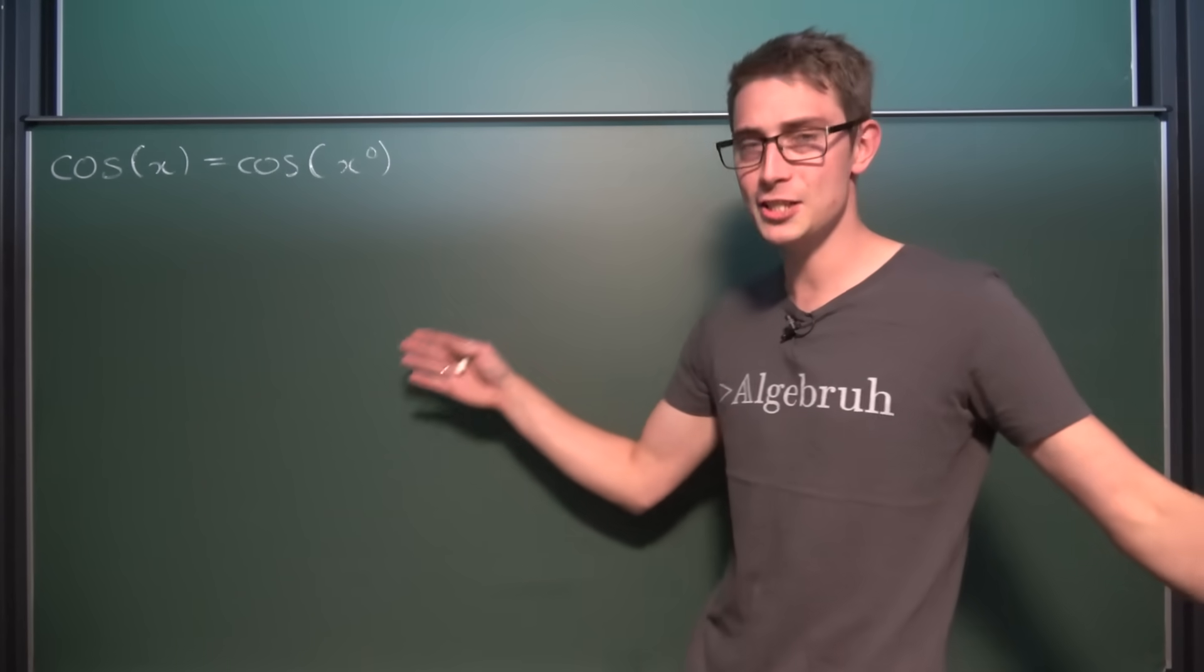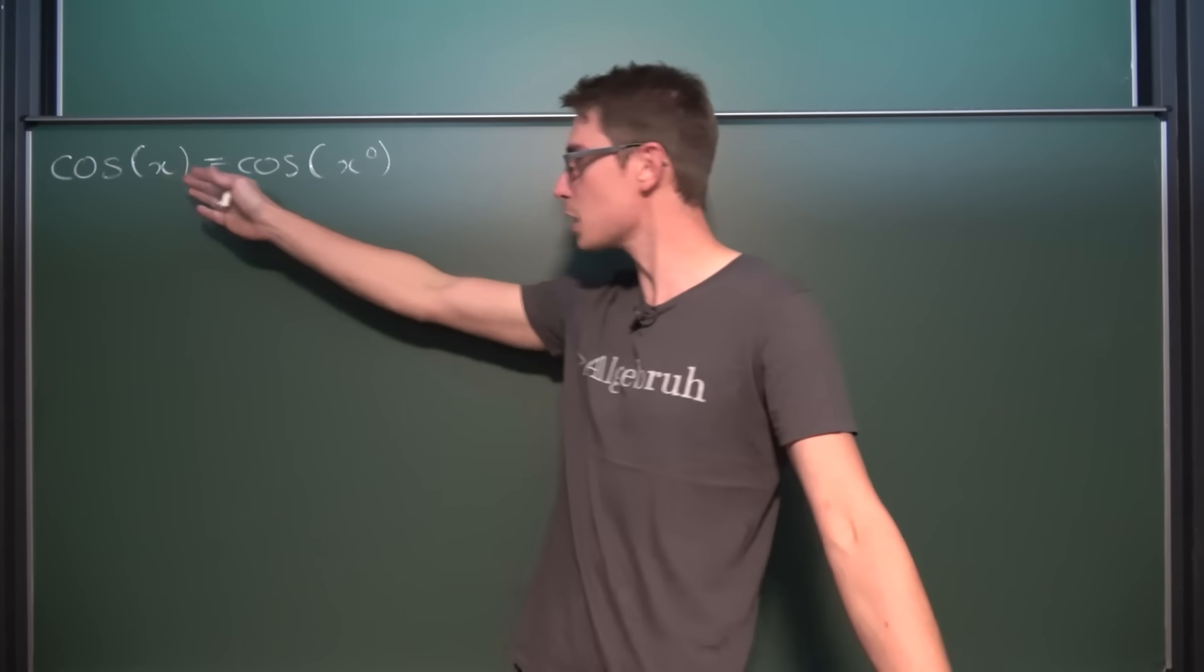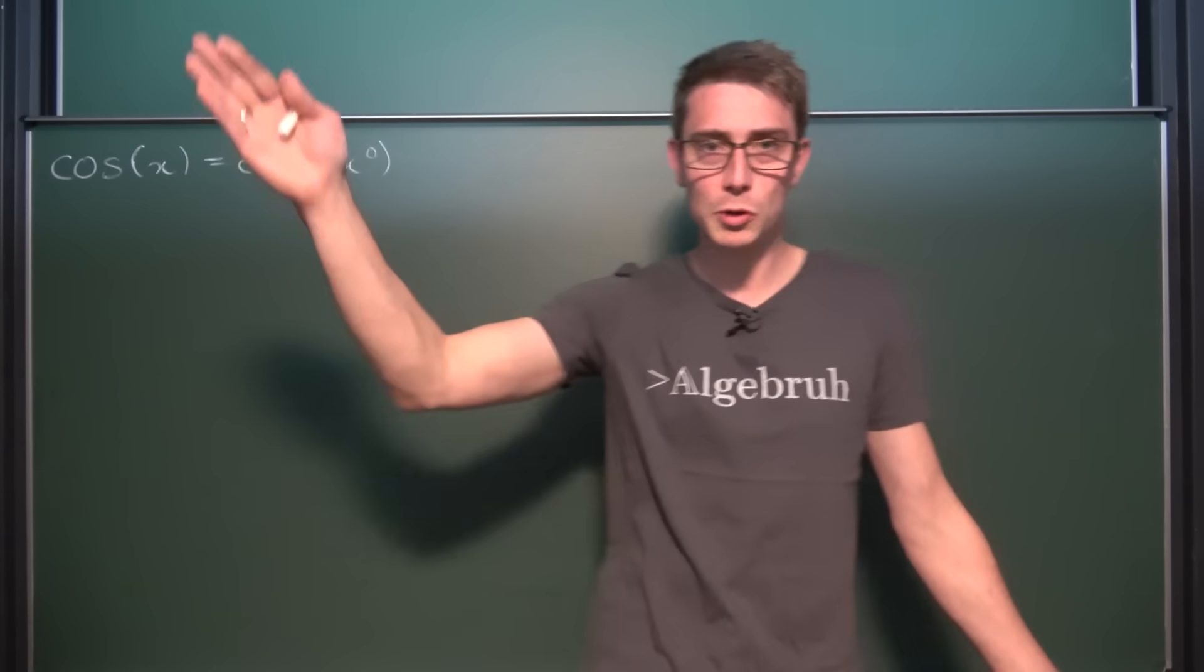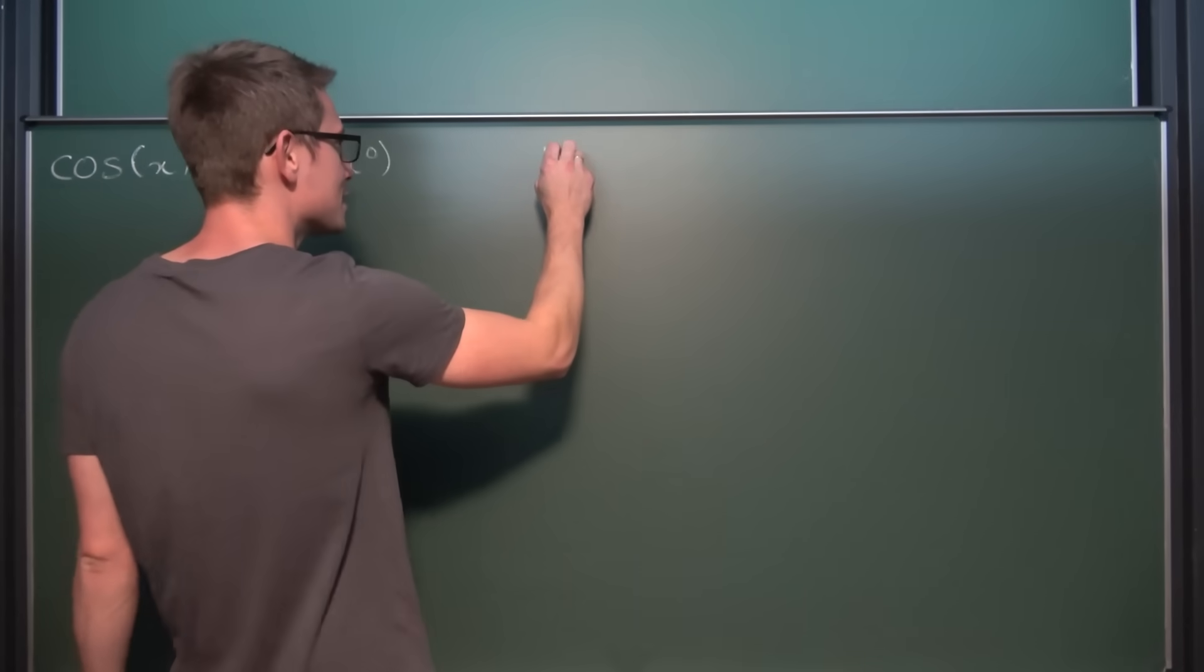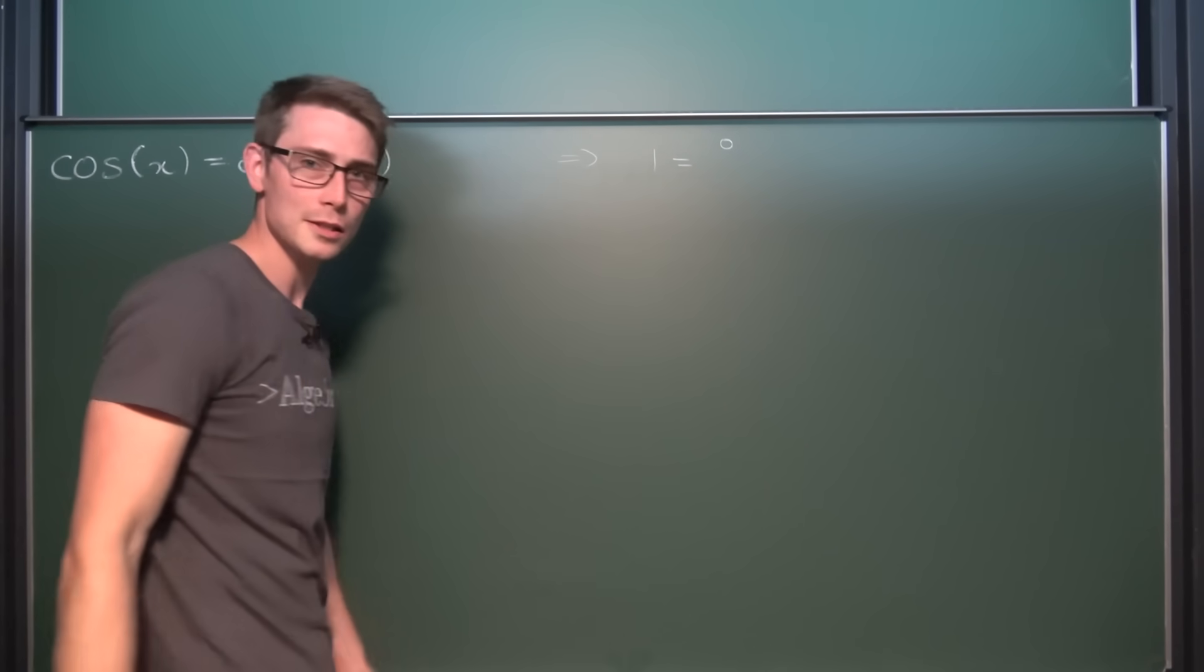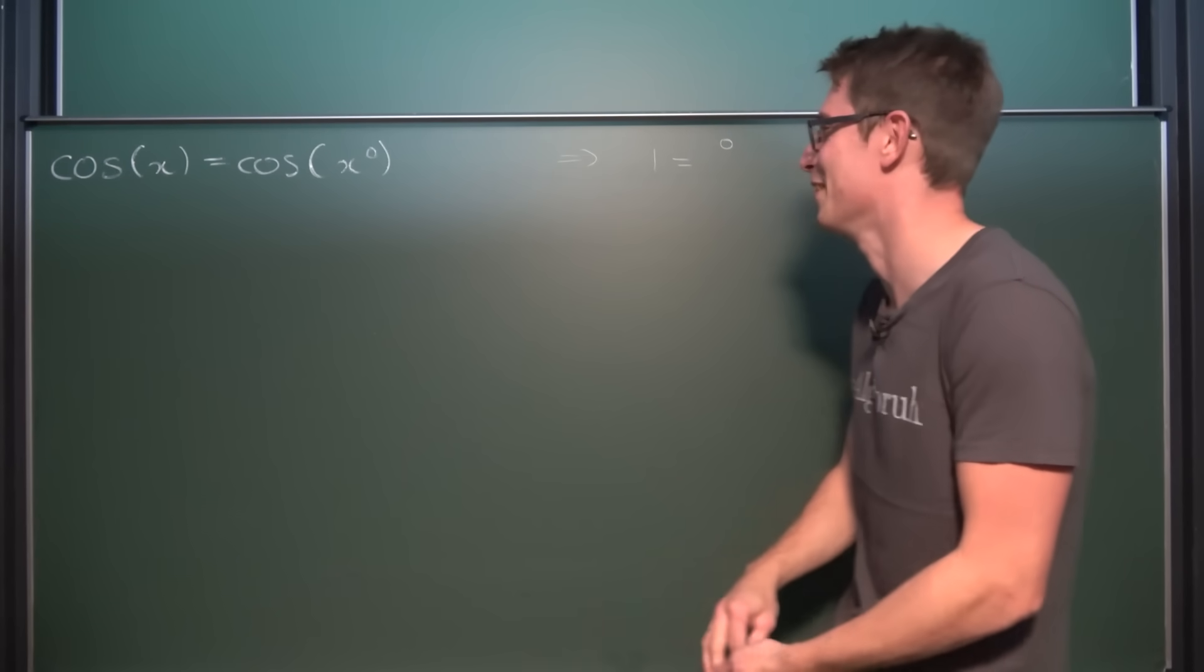So engineers might just use the inverse cosine on both sides. Then we have x is equal to x degrees. And then obviously we can cancel out the x, meaning that 1 is equal to degrees. And then they just call it quits for the day. Oh my goodness.